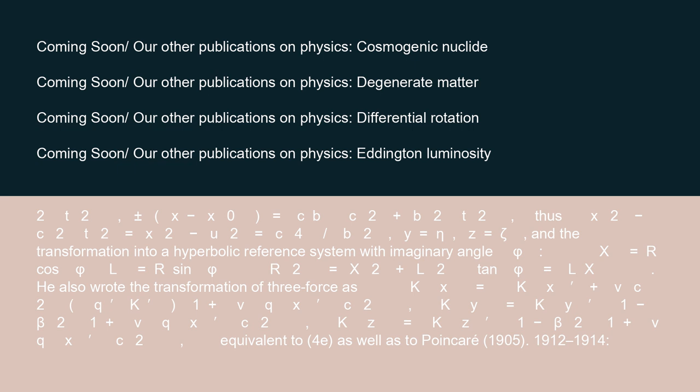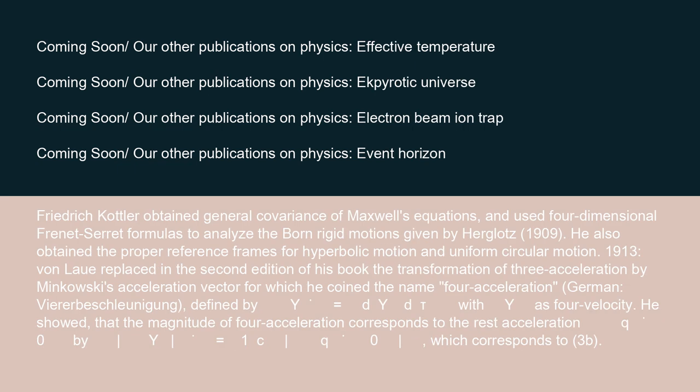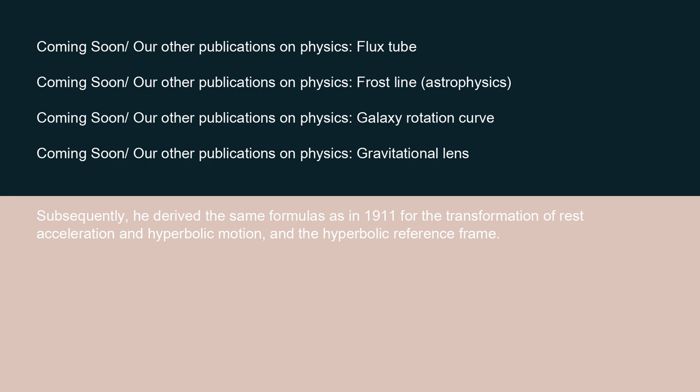1912–1914: Friedrich Kotler obtained general covariance of Maxwell's equations, and used four-dimensional Frenet–Serret formulas to analyze the Born rigid motions given by Herglotz 1909. He also obtained the proper reference frames for hyperbolic motion and uniform circular motion. 1913: von Laue replaced in the second edition of his book the transformation of three-acceleration by Minkowski's acceleration vector, for which he coined the name four-acceleration (German: Viererbeschleunigung), defined by y′ equals dy/dtau with y as four-velocity. He showed that the magnitude of four-acceleration corresponds to the rest-acceleration q₀ by |y′| equals (1/c)·q₀, corresponding to 3b. Subsequently, he derived the same formulas as in 1911 for the transformation of rest-acceleration and hyperbolic motion in the hyperbolic reference frame.